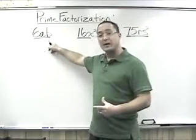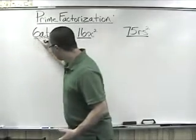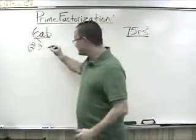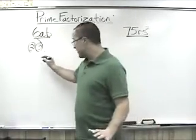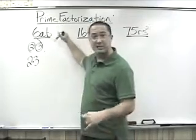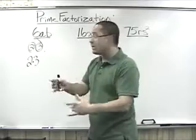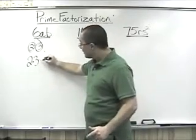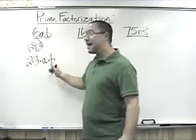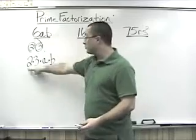Let's do 6ab first. 6 comes from 2 times 3 — both prime, so 6 is taken care of. We have an a and a b, meaning 6 times whatever a is times whatever b is. We don't know what a or b are, so we can't break them down — we keep them as they are. So this becomes 2 times 3 times a times b. That is the prime factorization of the algebraic expression 6ab.